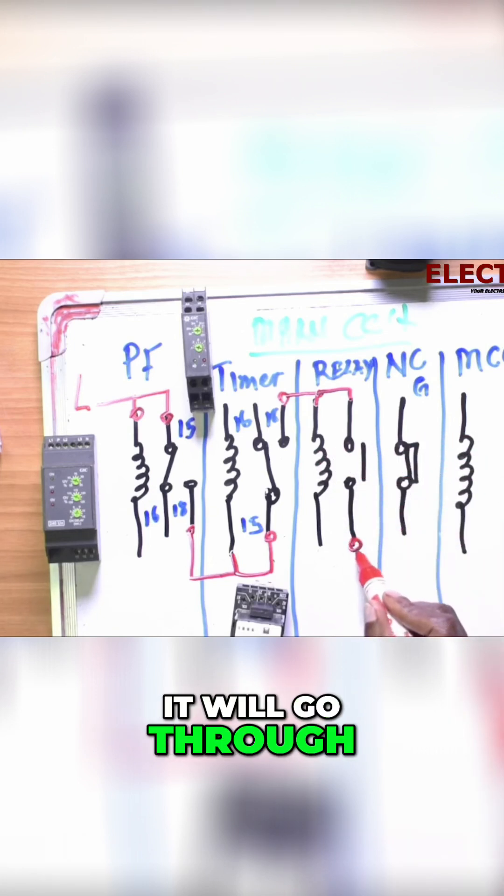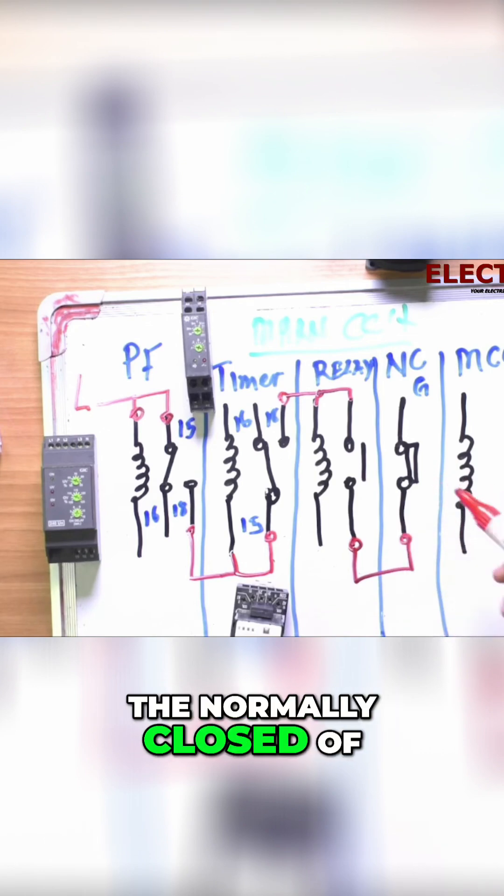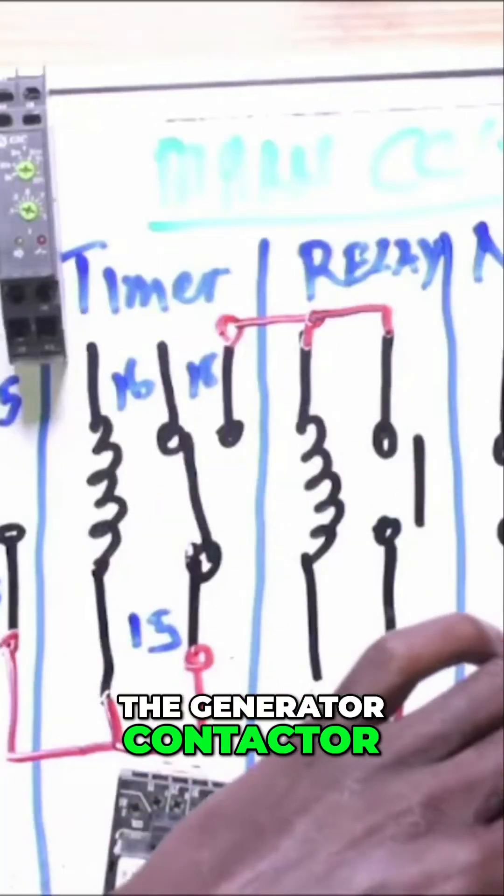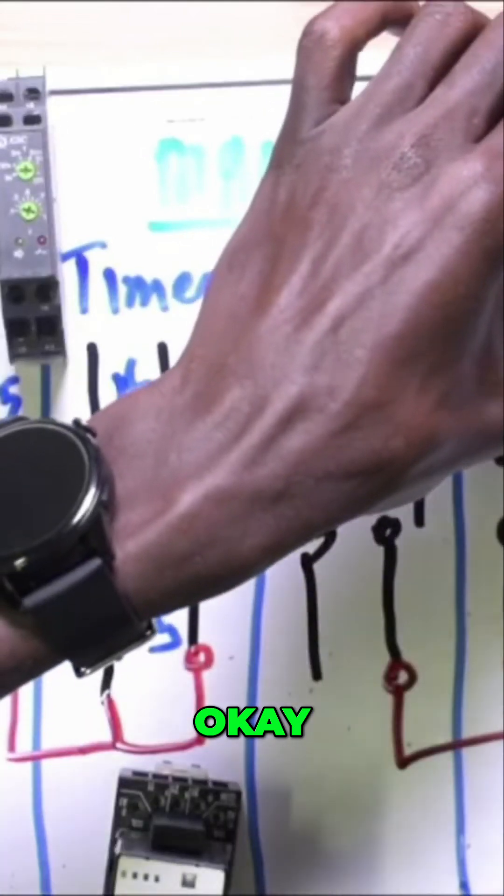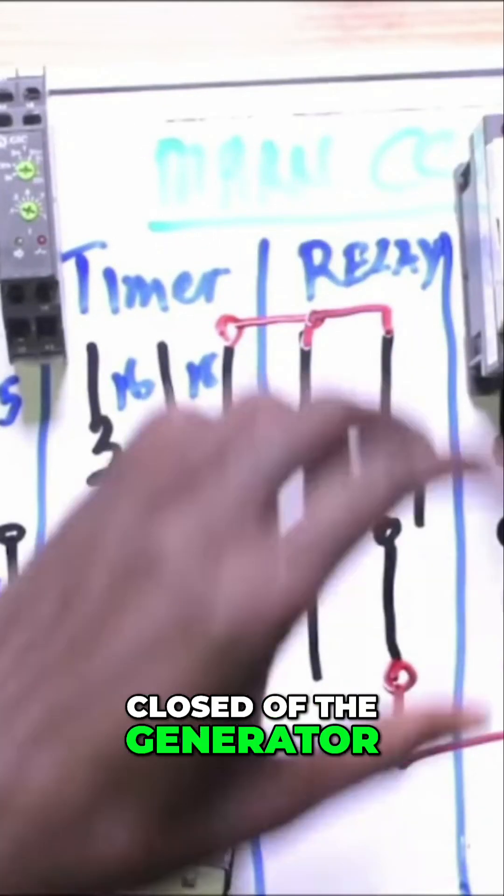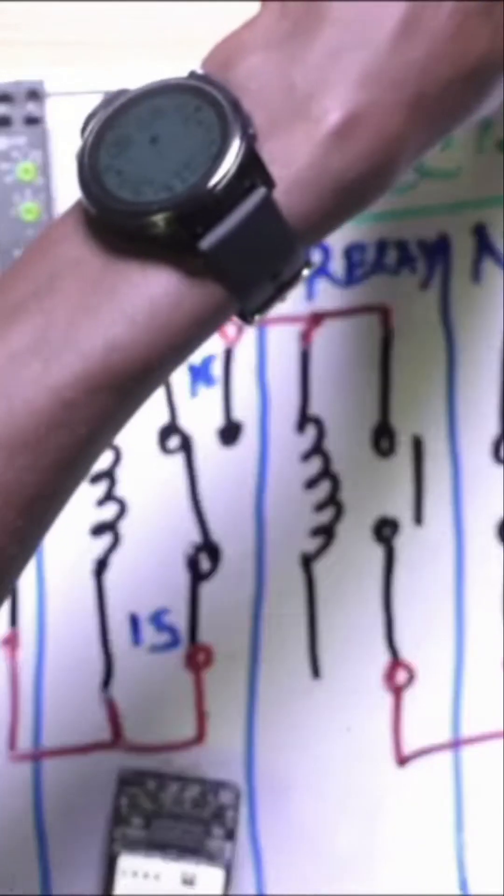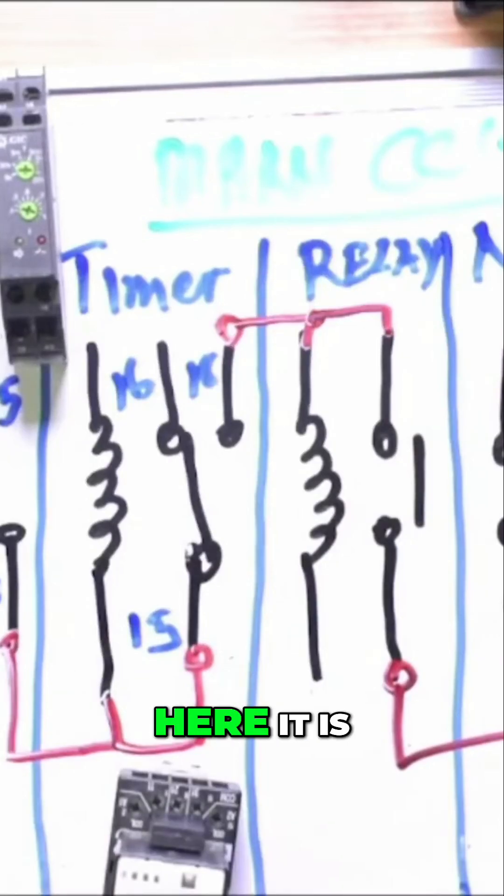When it closes, it will go through the normally closed of the generator contactor. It goes to the generator contactor coil.